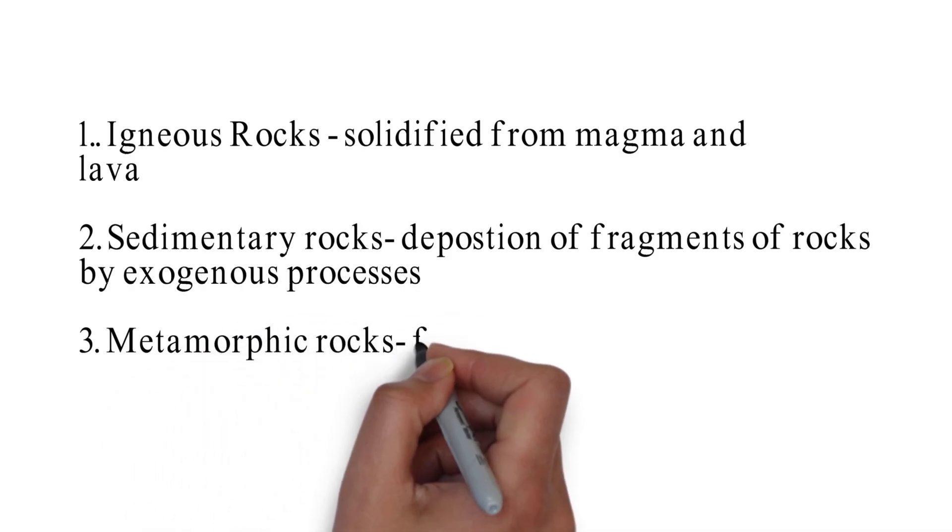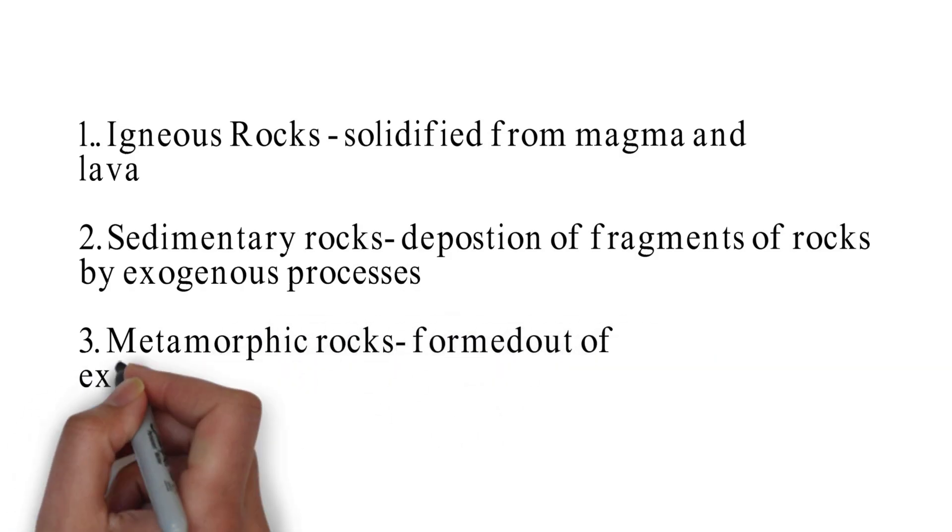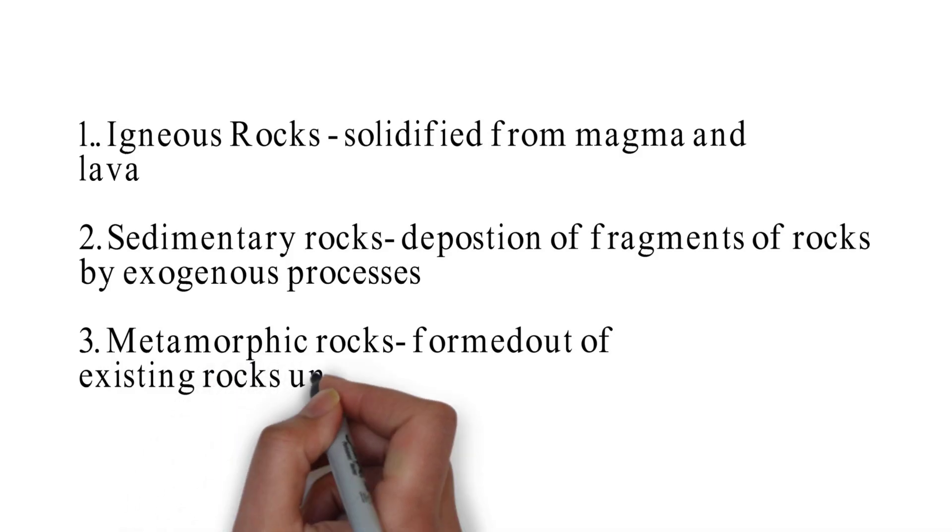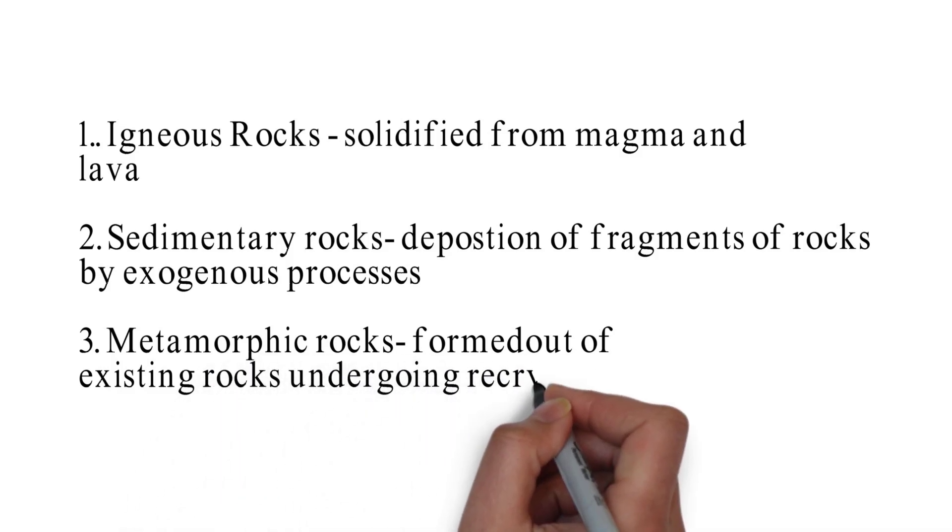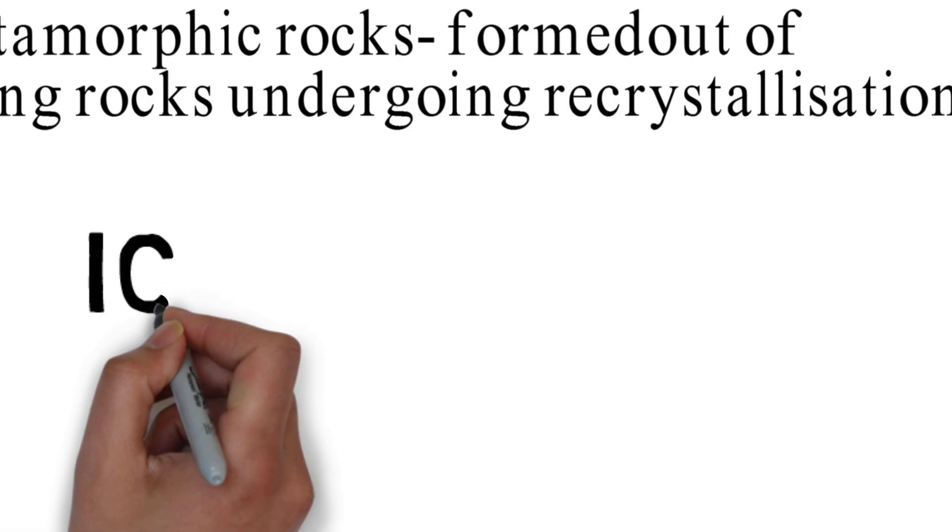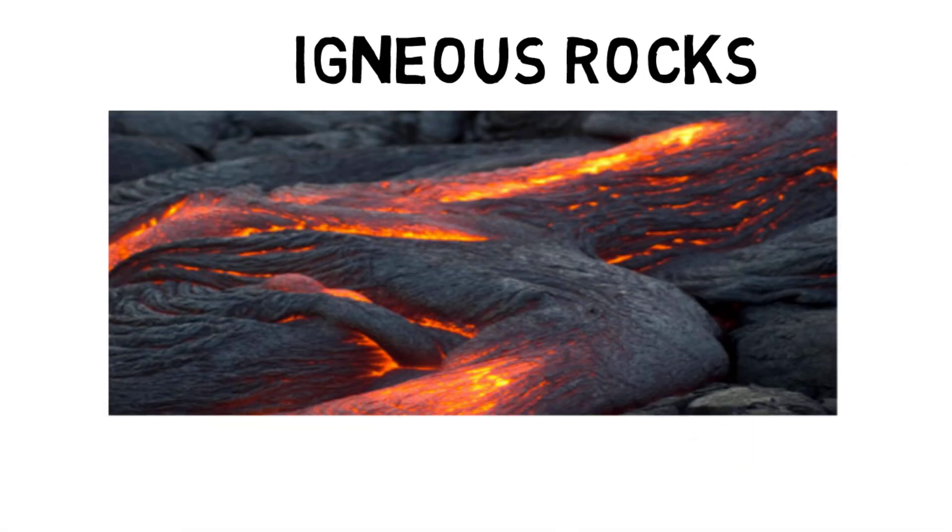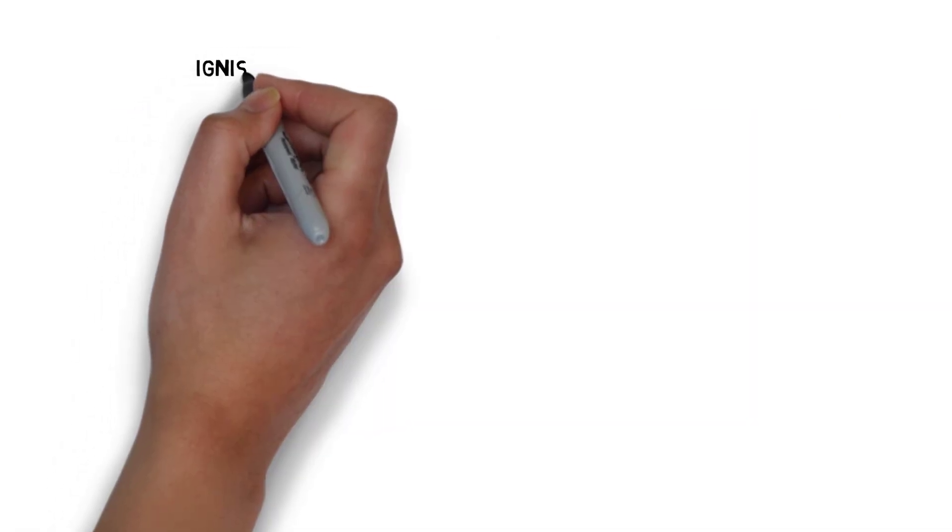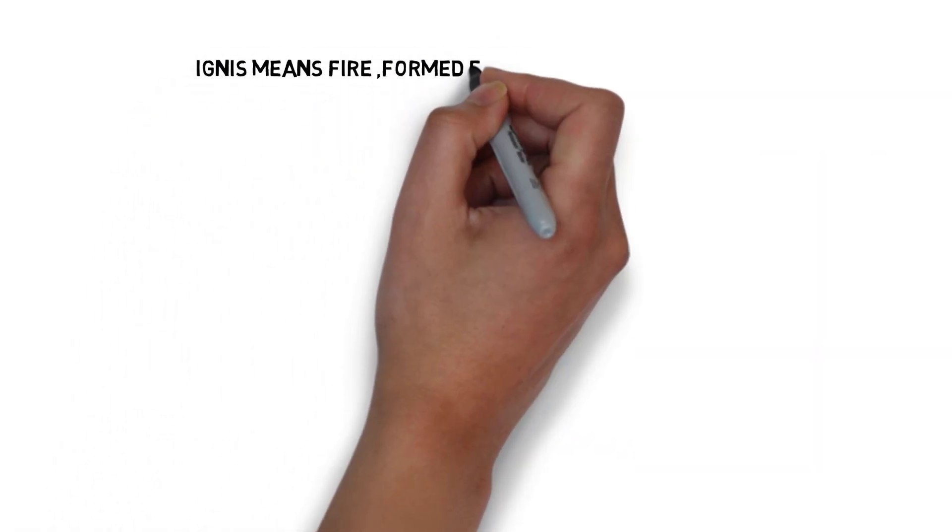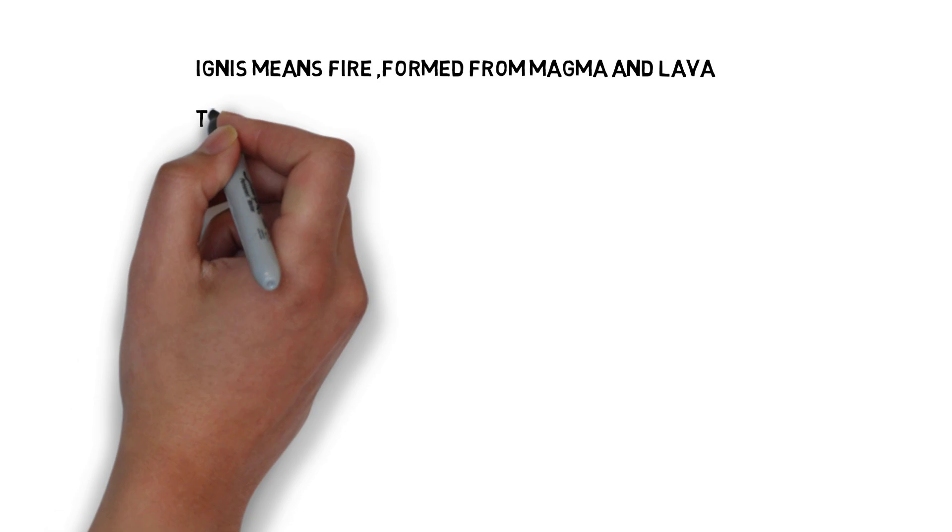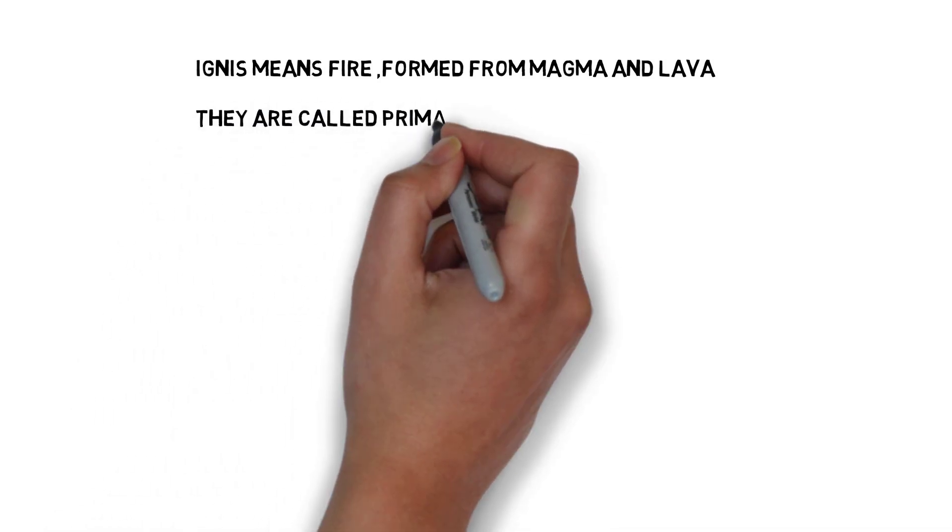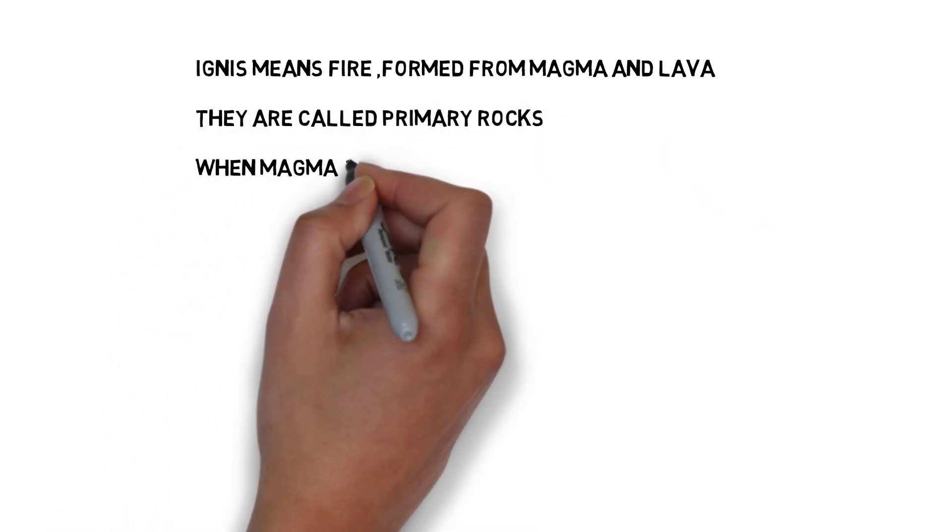Let us move forward. The third rock is the metamorphic rock, and evident from its name, it is formed out of existing rocks undergoing recrystallization. Now, the first major form of rock is igneous rock. Igneous is taken from the Latin word ignis which means fire because it forms from magma and lava. They are called primary rocks.